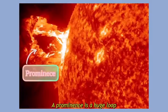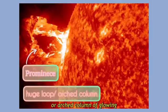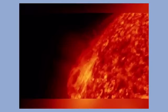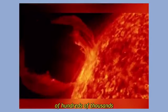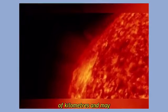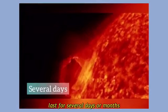A prominence is a huge loop or arc column of glowing gases over the sunspot. A prominence can reach heights of hundreds of thousands of kilometers and may last for several days or months.